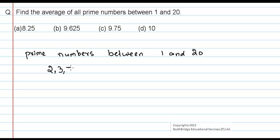3, 5, 7, 11, 13, 17, and 19. So these are the prime numbers between 1 and 20.